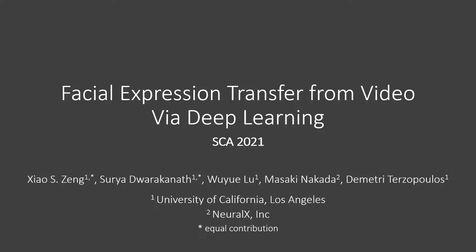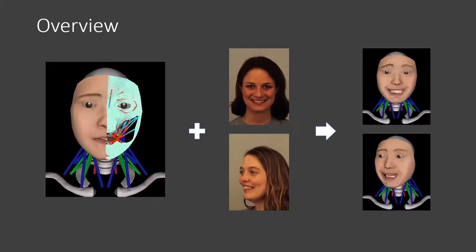In this work, we present a novel machine learning approach to transferring facial expressions and head movements from facial images and videos to a biomechanical musculoskeletal face-head-neck model. We demonstrate this expression and pose transfer framework as a proof of concept that could potentially be applied to any physics-based muscle-driven model.